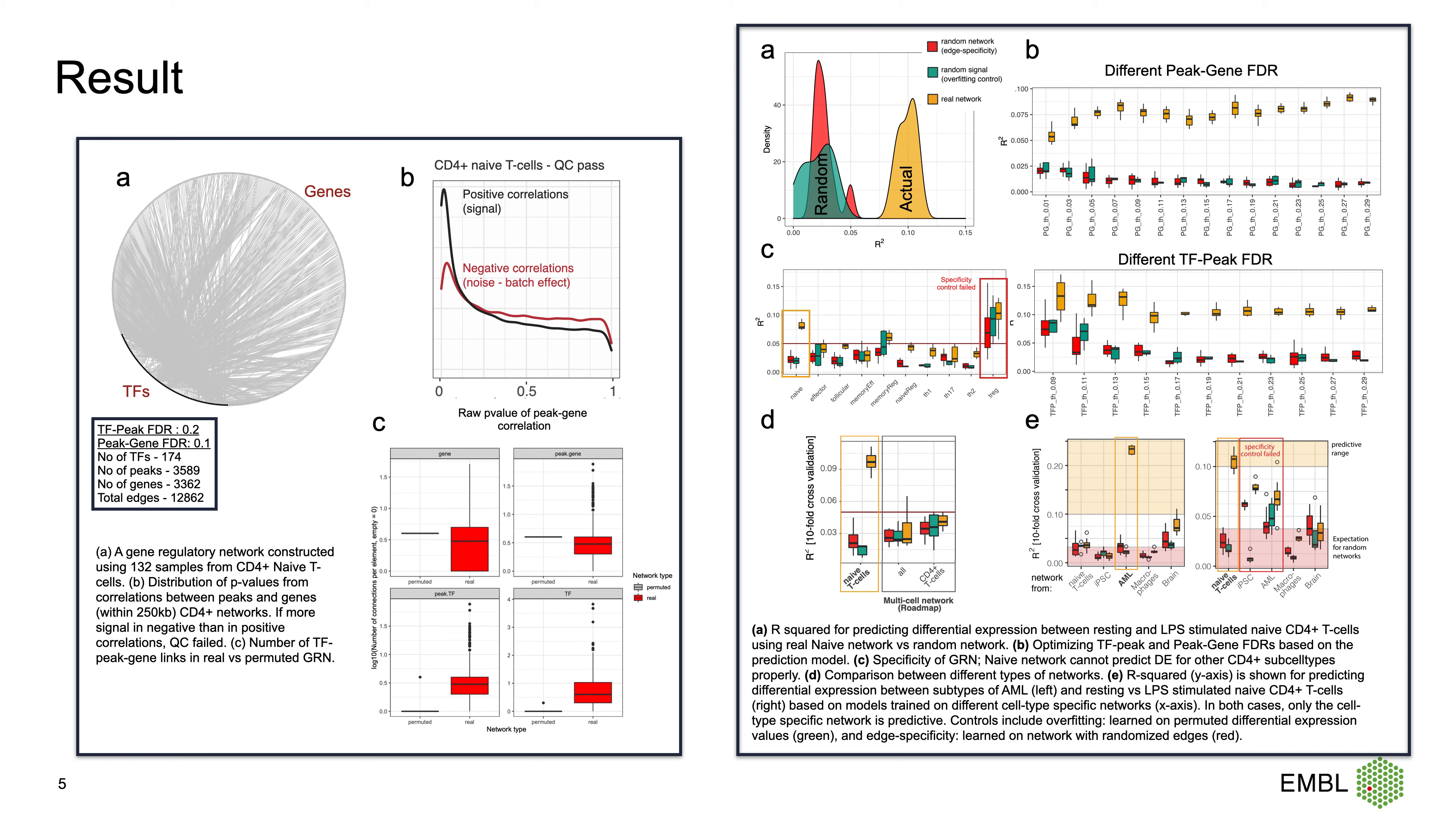In the last plot, we compared the performance of GRN based on different data: on subtypes of AML, on two subtypes of AML, and resting versus stimulated naive CD4+ T cell. You can see only the cell type specific network is predicted.